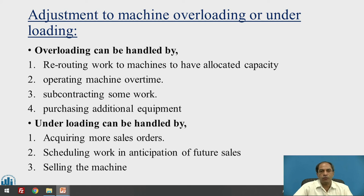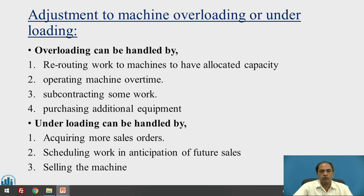The next option for overloading is subcontracting or outsourcing some work. This requires a subcontracting policy and pre-existing outsourcing capacity. For example, if you are already outsourcing 30 percent of work, you can increase that percentage. As a last resort, if the load still cannot be adjusted, you must invest in additional infrastructure — purchasing new machines and equipment.